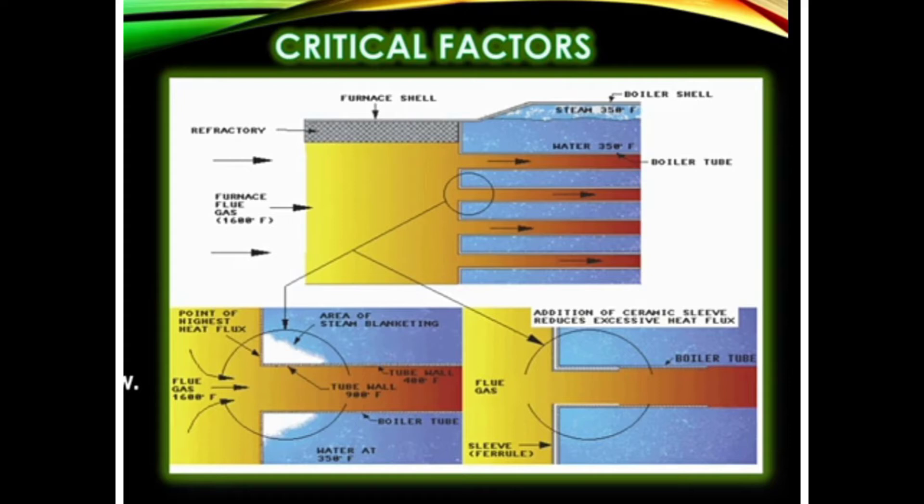At these corners or edges where flue gases first enter, there is very high heat flux and temperatures reach 900 Fahrenheit. Due to this high temperature, steam pockets are created at the corners, which is called steam blanketing. This ultimately causes overheating of the tube and leads to tube failure.